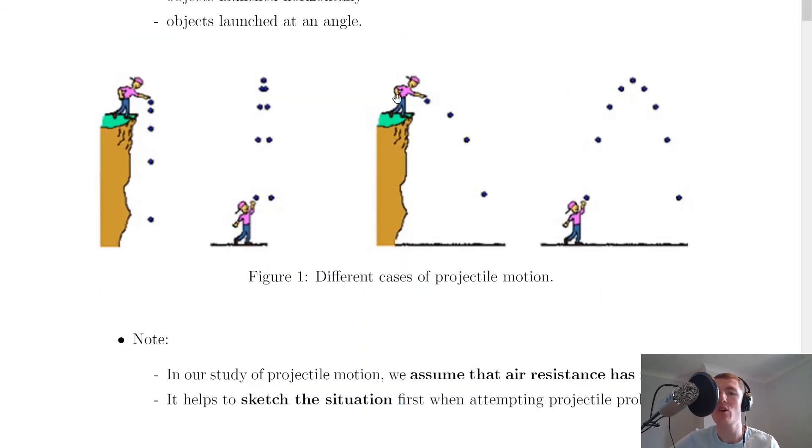So in this picture this summarizes the four cases. So here we've got somebody dropping an object from rest. Here we've got somebody launching an object vertically upwards. Here we've got somebody launching an object horizontally. And lastly we've got an object being launched at an angle.